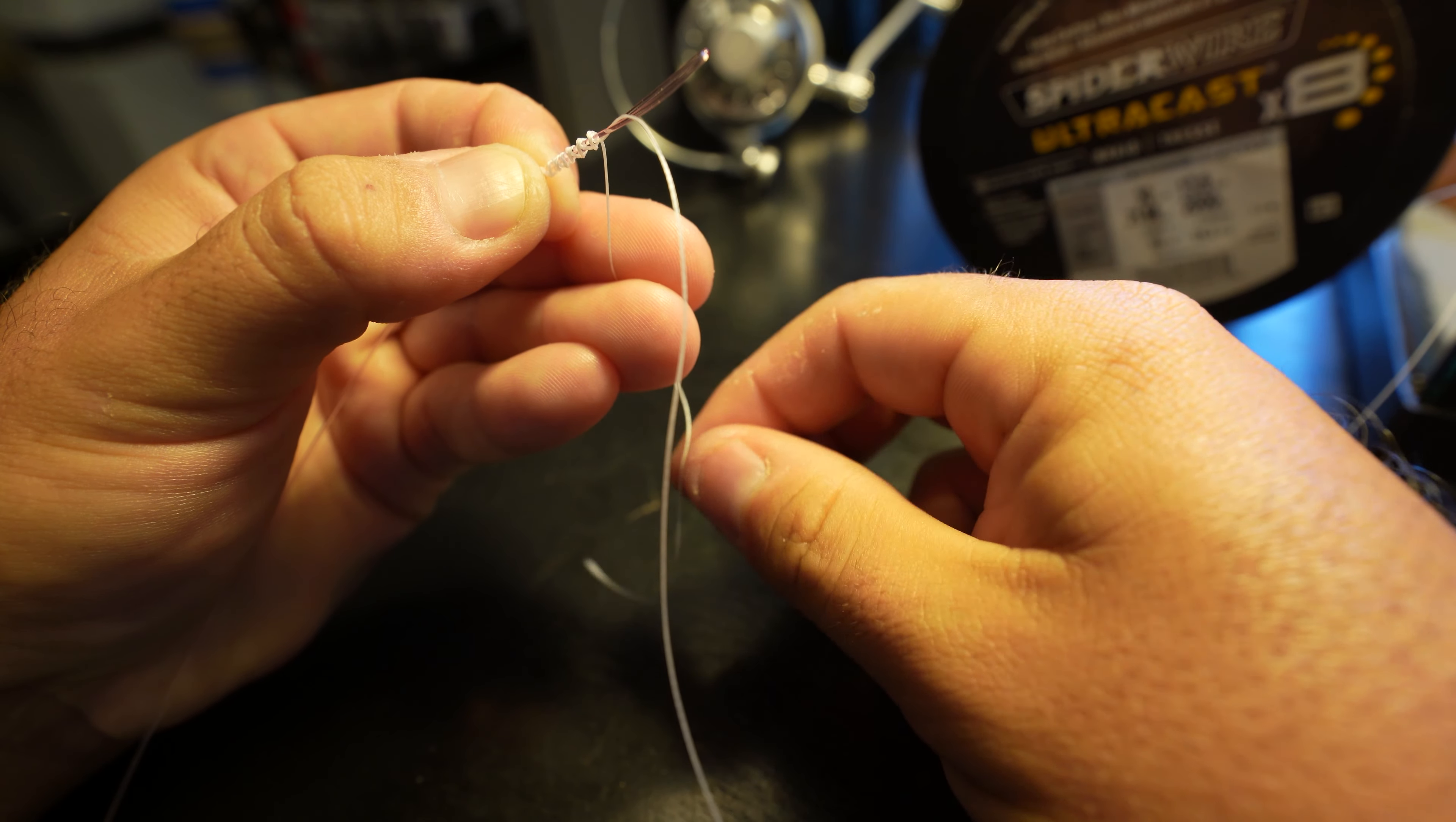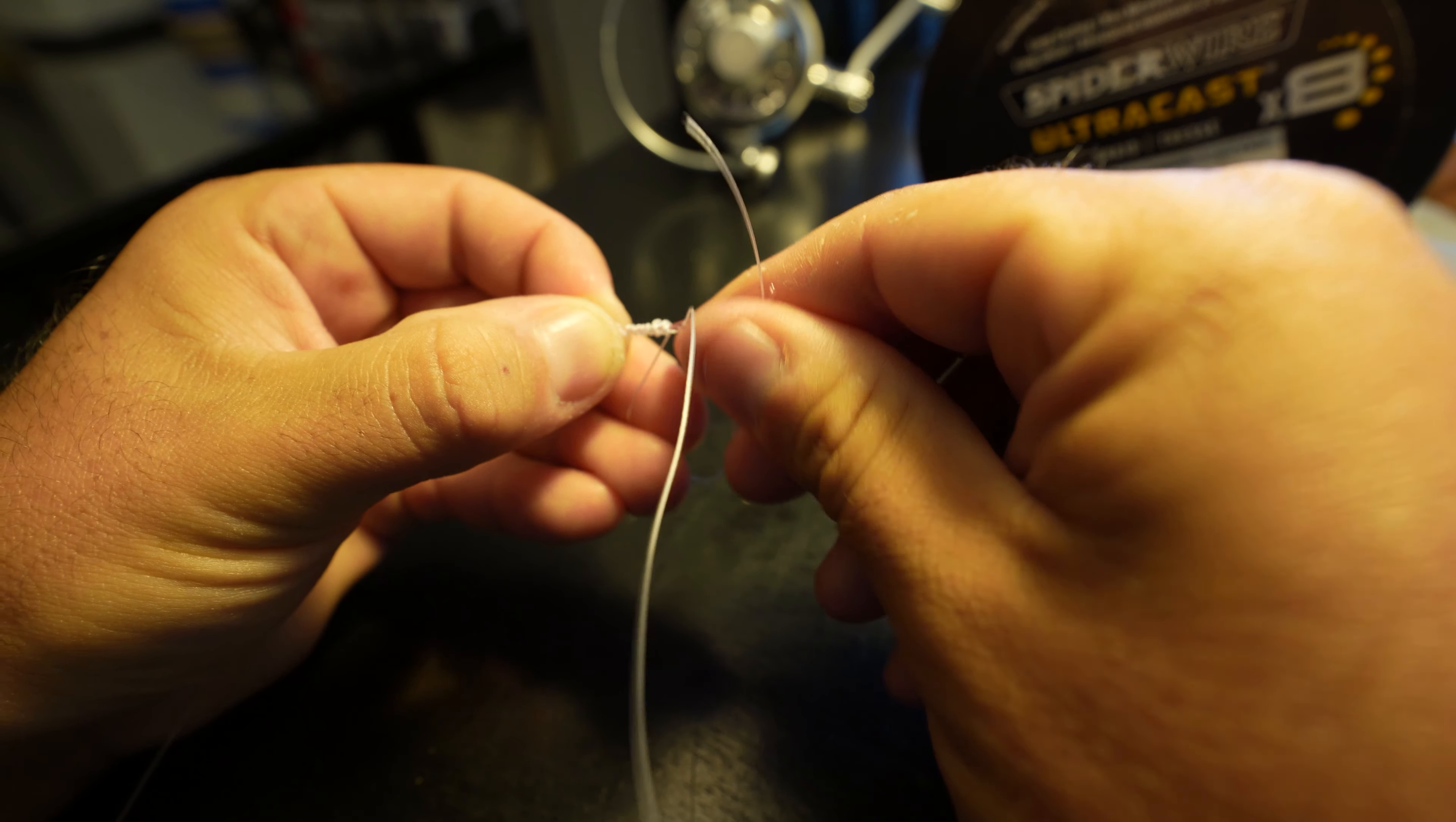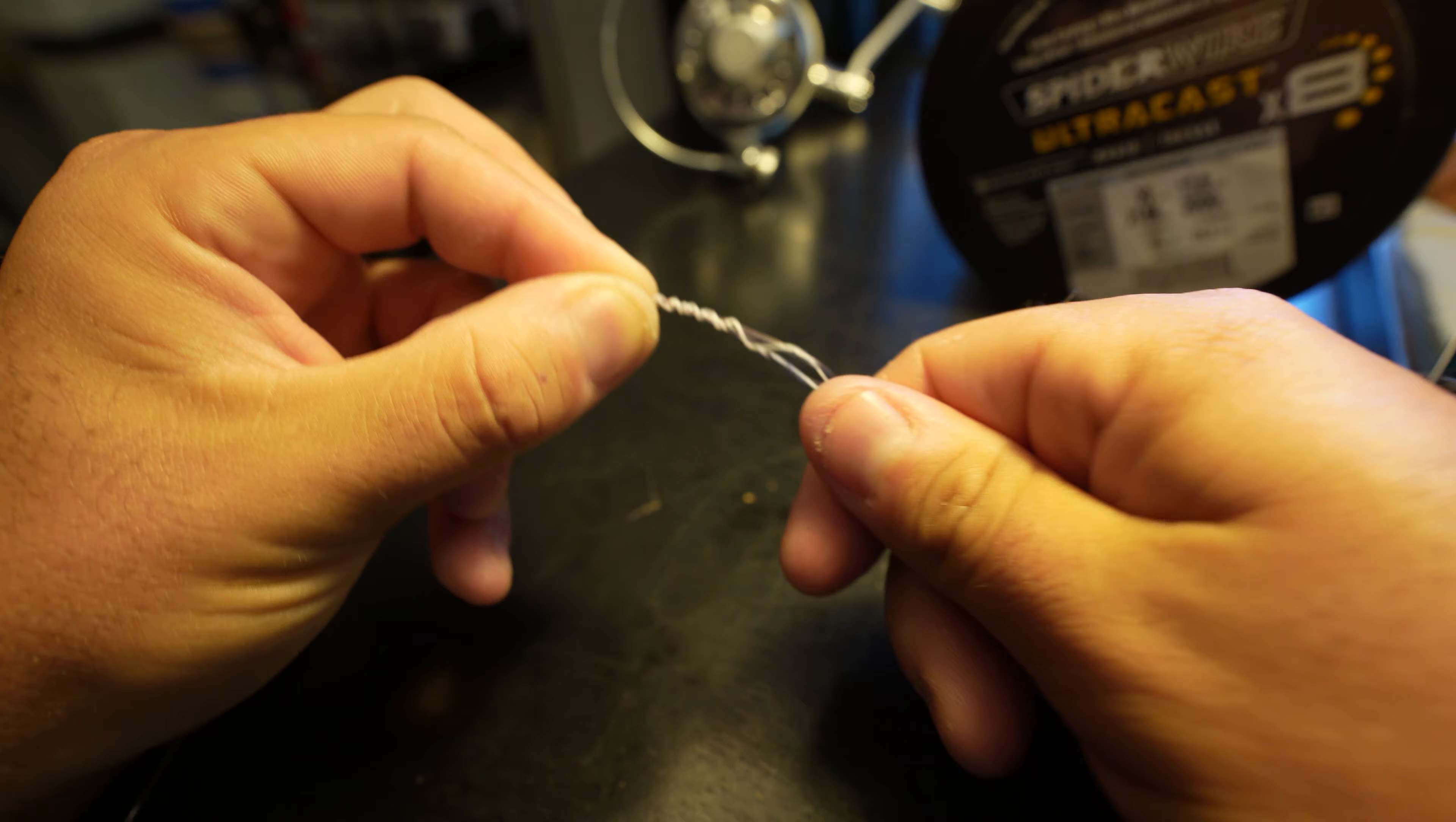Now the final step - you're pretty much done at this point, and this is why I say this knot's so easy. You just go down and back. Take the tag end of our braid and put it right back through that loop where we started. Now you're done with the knot. All we have to do is pull it tight, which I would say is the most difficult part of this knot.